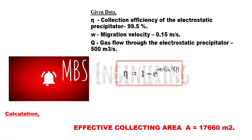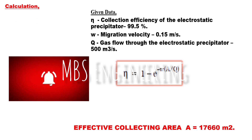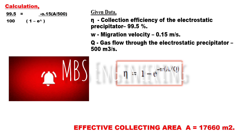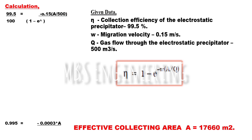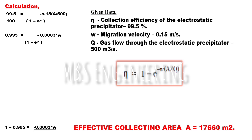Given data: collection efficiency (η) of the electrostatic precipitator is 99.5%. Migration velocity (ω) is 0.15 meters per second. Gas flow (Q) through the electrostatic precipitator is 500 cubic meters per second. Based on the given data, the effective collecting plate area of the electrostatic precipitator is 17,660 square meters.